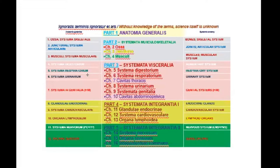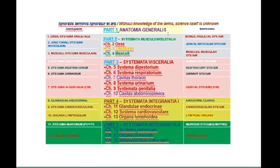Next, it's splanchnology, or in modern terminology, the visceral system. The visceral system includes only the digestive system, respiratory system, urinary system, and genital systems. I want to emphasize: genital system, not reproductive system. It is a big mistake when the genital system is called the reproductive system, because not only the reproductive function is present in the genital system.